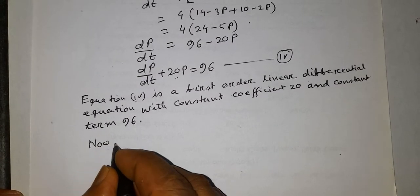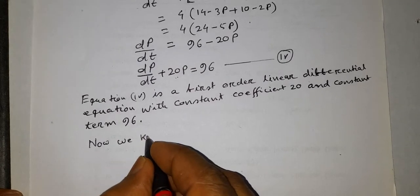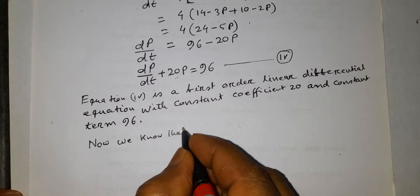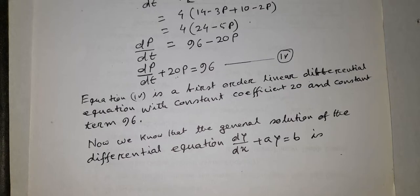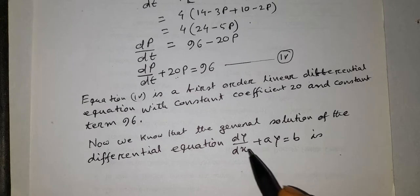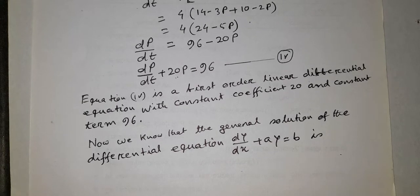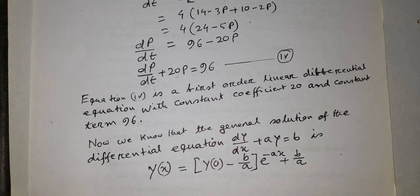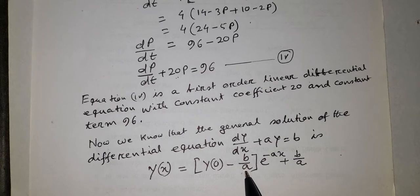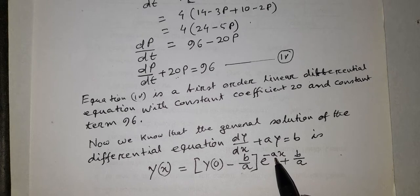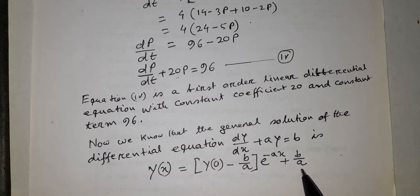We know that the general solution of the differential equation dy/dx + ay = b is: y(x) = [y(0) − b/a] · e^(−ax) + b/a.